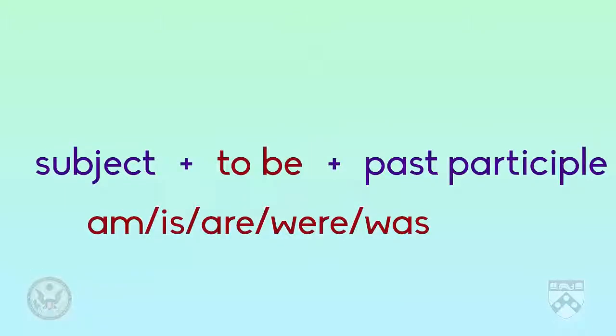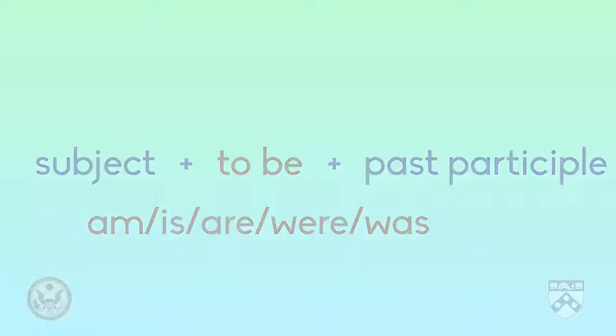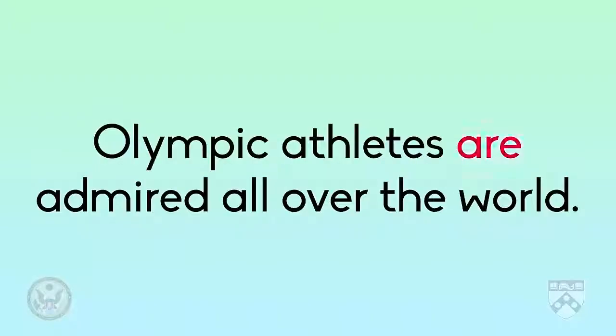Now let's look at the structure of passive voice. The verb is expressed in two parts: the verb 'to be' — am, is, are, was, were — and the past participle. The verb 'to be' shows the tense. For example, 'Olympic athletes are admired all over the world.' We can see that this is in the present tense because of the verb 'to be.'